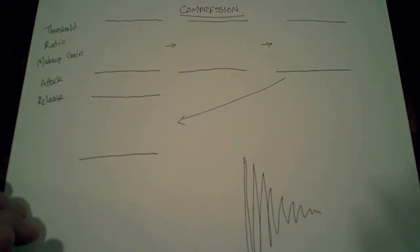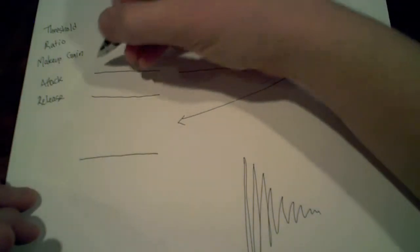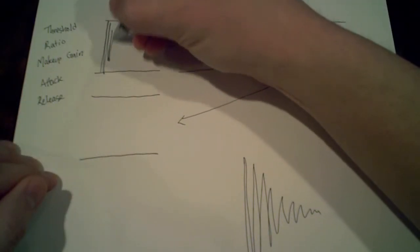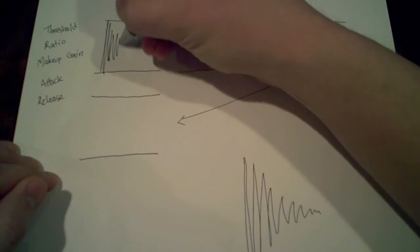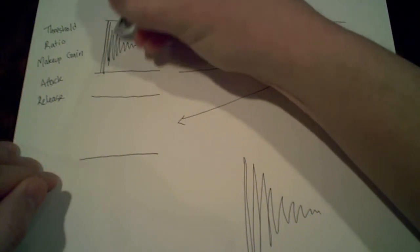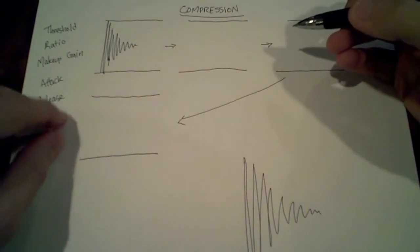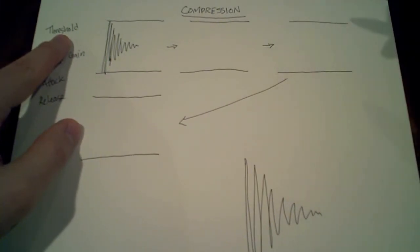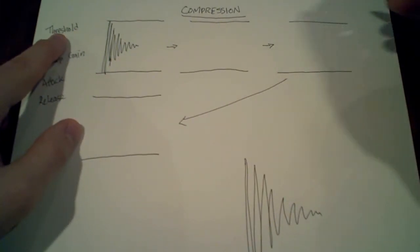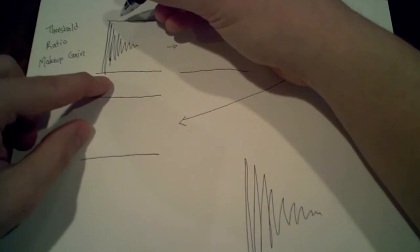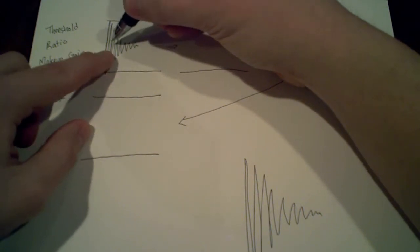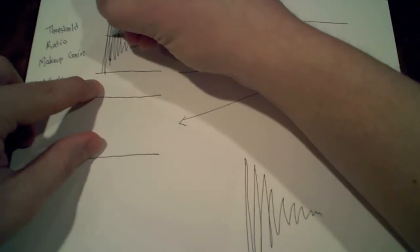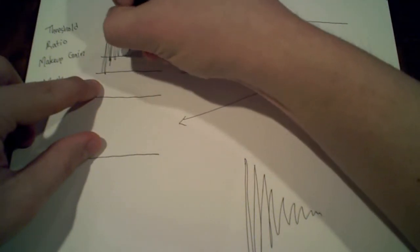For this example, we'll draw what a drum hit looks like in soundwave form. You've got your attack of the drum that's really loud, and then it'll decay very quickly. The threshold is the point around which compression takes place. We don't want to set our threshold too high or it won't affect anything, and too low it'll squash the sound of the drum.